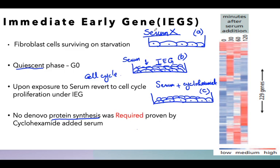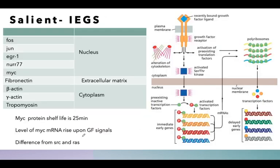Upon exposure to a growth factor, although the transcription machinery was halted by cycloheximide, the pre-existing protein components were substantial enough to initiate proliferation. This means no new protein synthesis was being required — the already-present protein compounds were enough to initiate cell proliferation.